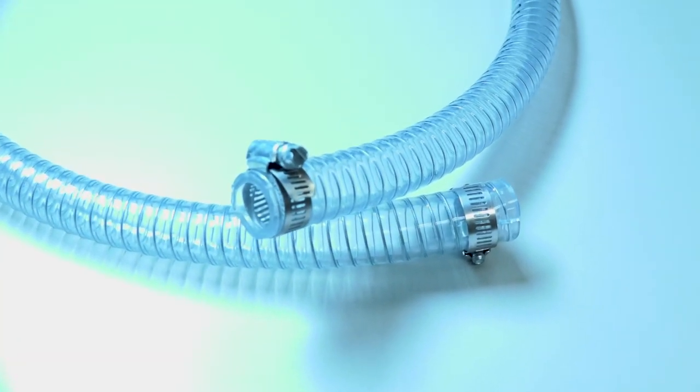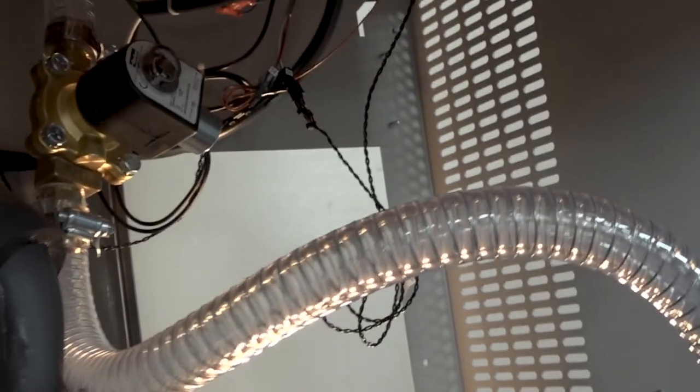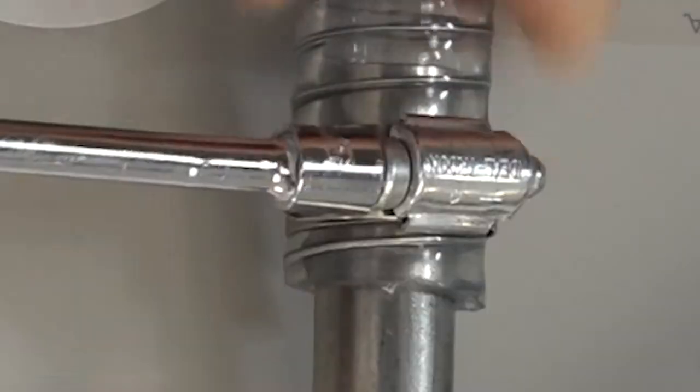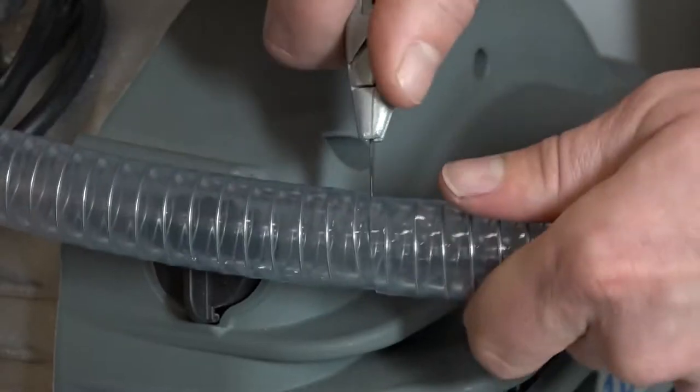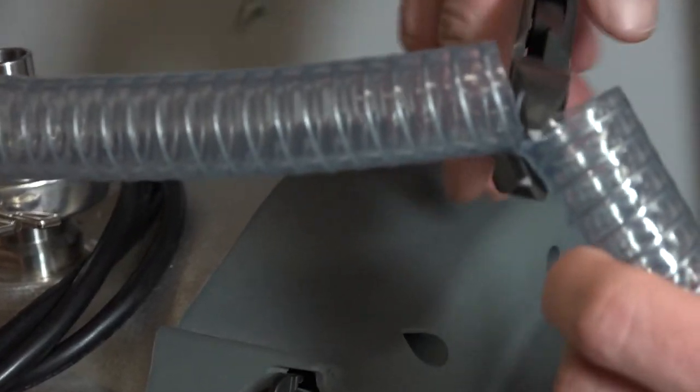Use the hose clamps provided to attach one end of the vacuum hose to the port inside the Freezone. Connect the other end to the inlet port of the vacuum pump. If necessary, cut the hose to allow for a gentle bend without kinks.